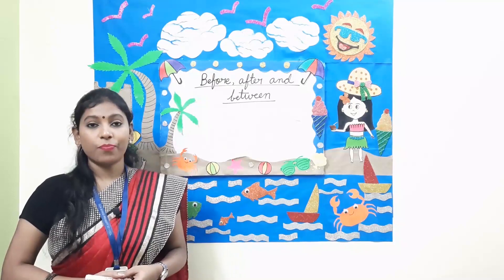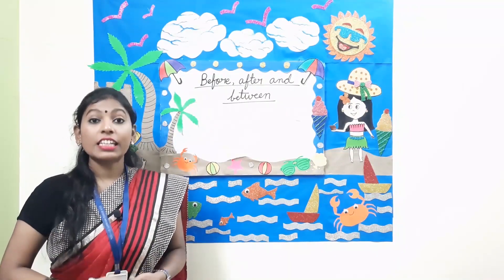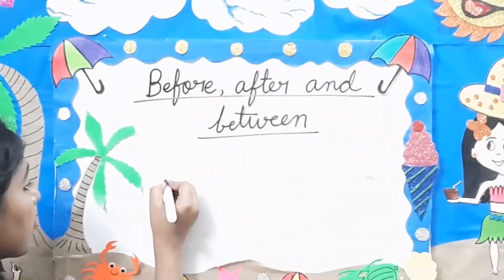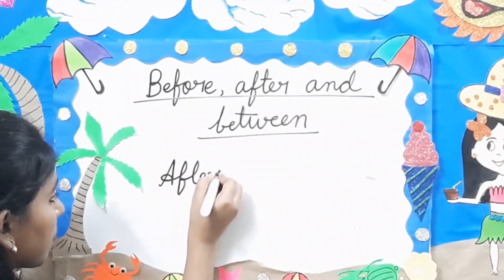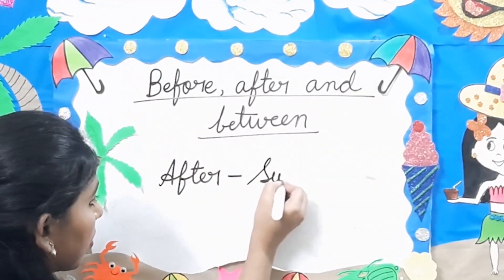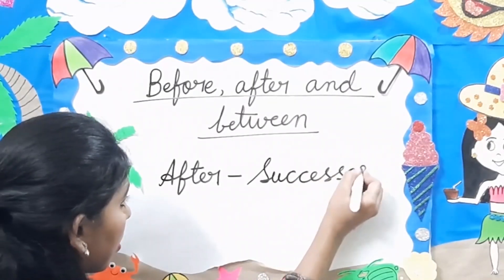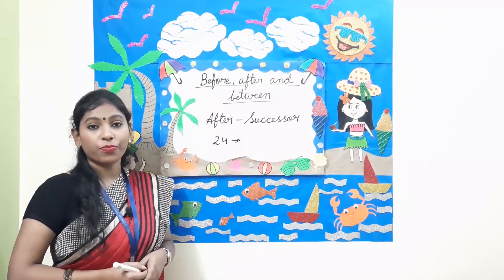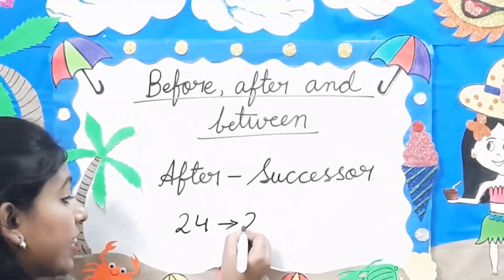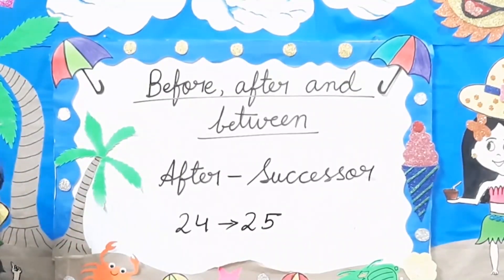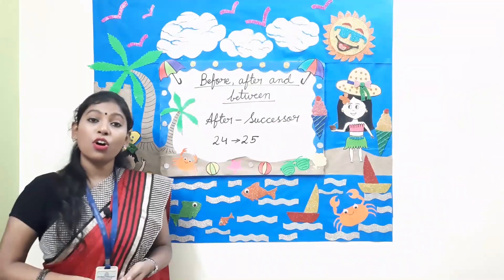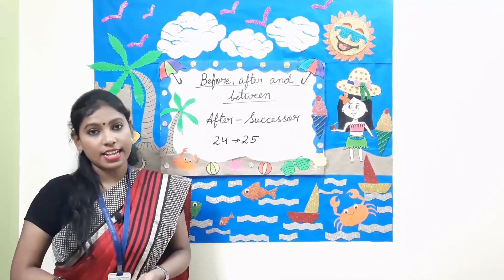Now what is after? After means behind. The other term used for after is successor. Like, what is the successor of 24? 25 is the successor of 24, because 25 comes after 24. This is how you write the successor of any number.